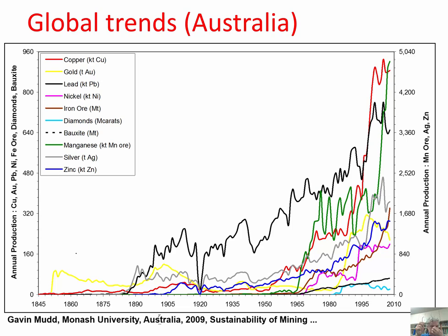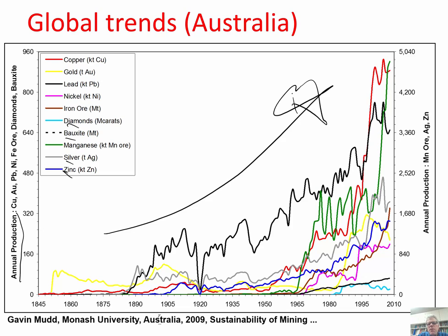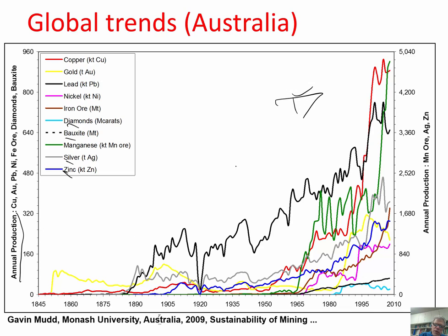If you look at global trends — here's Australia as an example — this shows annual production of a whole bunch of different minerals including diamonds, lead, and copper. The trend with almost all of these things is up in a big way. We're using more stuff all the time, and the problems we saw in Butte are still with us — not quite as clear and crystalline sometimes, but annual production of everything is going up.